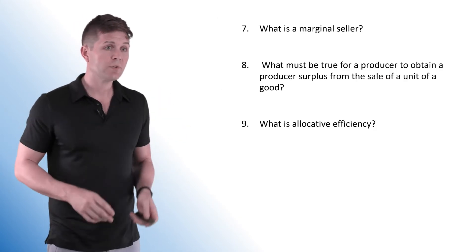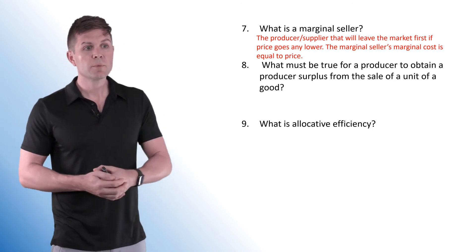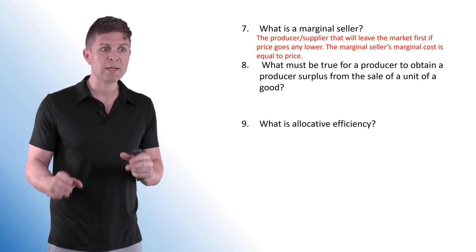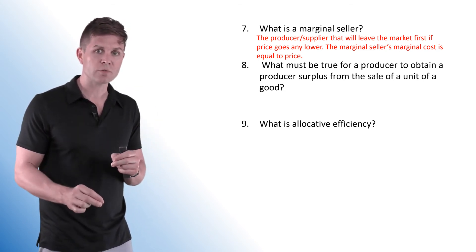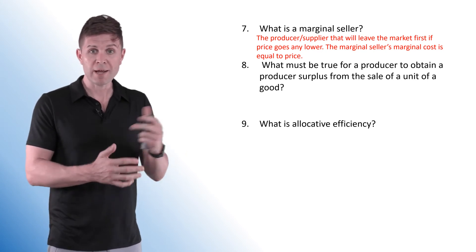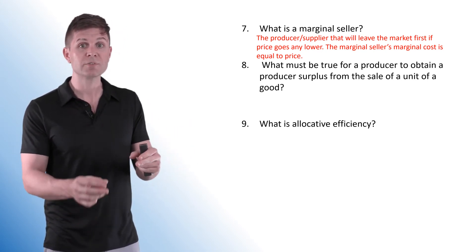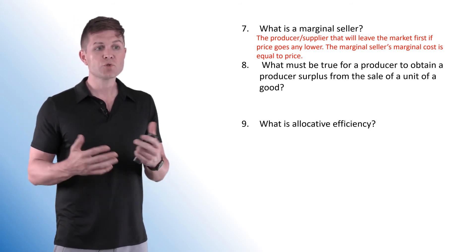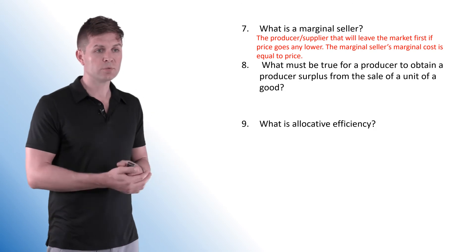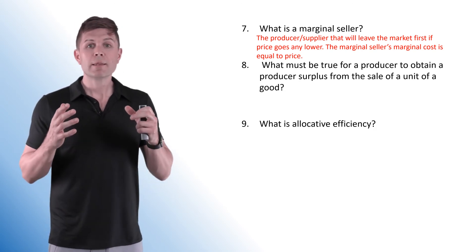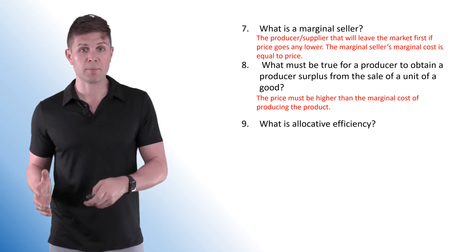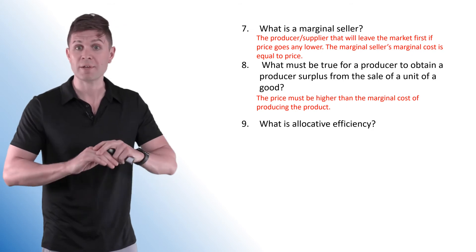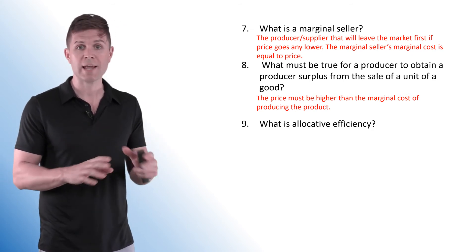A few more definition and wording type questions. What is the marginal seller? The producer or supplier that will leave the market first if the price goes any lower — he is producing at cost. The price of the product is $6 and his marginal cost is $6; if the price goes any lower, it's not worth it and he would leave the market. What is true for a producer to obtain producer surplus? The price has to be higher than the marginal cost. If the price is at or lower than marginal cost, the producer gets no surplus.